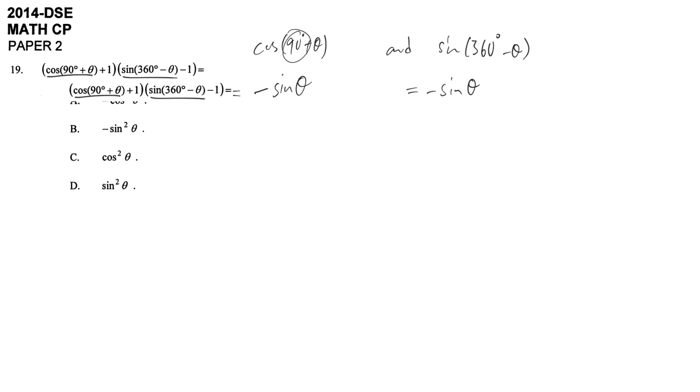Then we simplify both parts, then we can continue our calculation. This one is equal to minus sine theta plus one, and then if sine theta minus one is expanded, you will get sine square theta minus one.